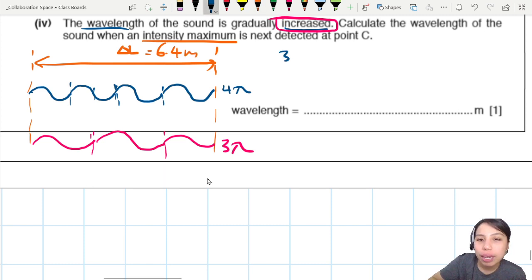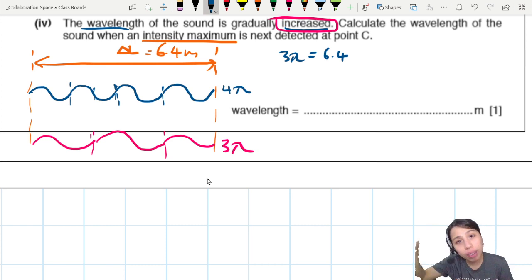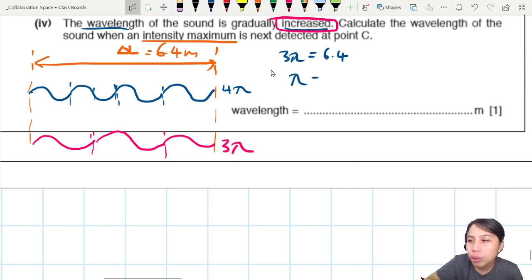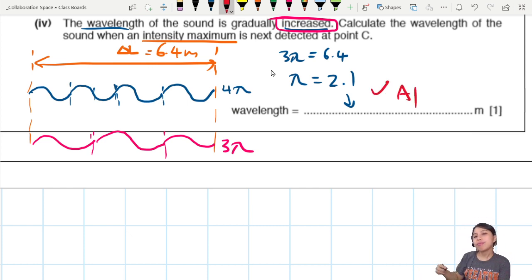So, 3 lambda equals to 6.4 path difference. Okay, still constructive because still multiple of lambda. 3 lambda, 4 lambda, 5 lambda. And then, we will have lambda equals to 2.1 meters. So, write the answer here. So, this will be 1 mark. Wavelength increase. The next one, longer.